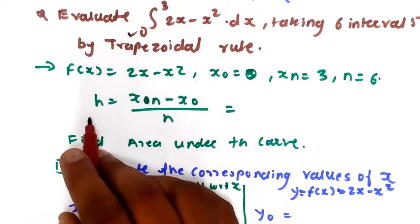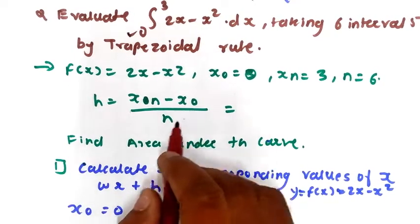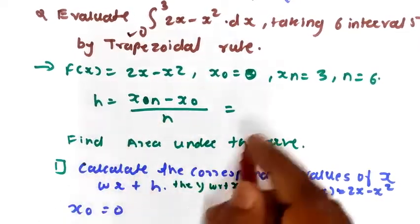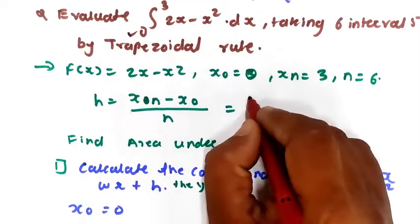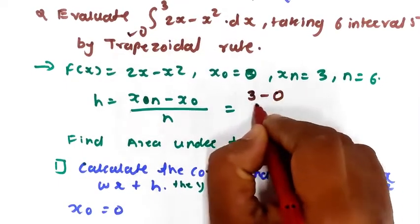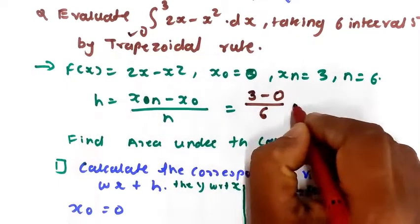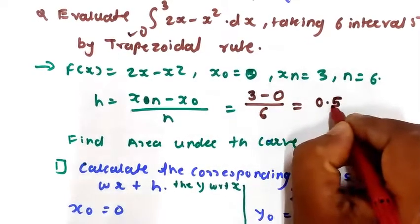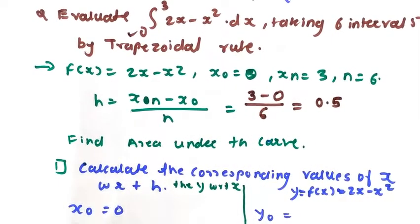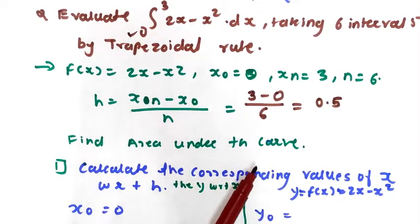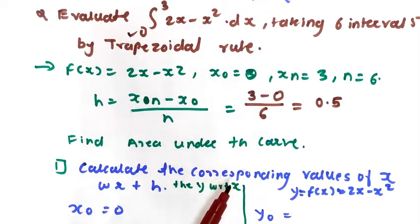The formula for step size h is equal to (xn minus x0) divided by n. Putting in the values, we get (3 minus 0) divided by 6, which equals 0.5. Next, we need to find the area under the curve using the trapezoidal rule formula.